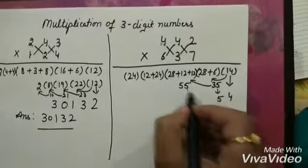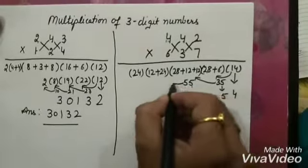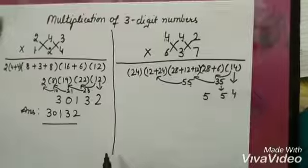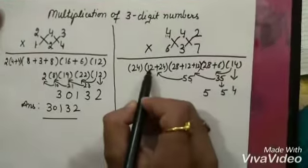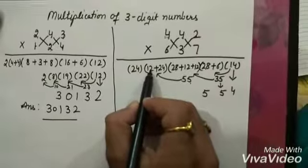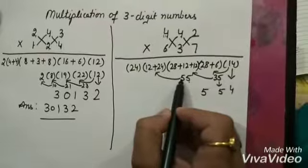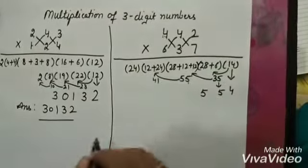So this 5 we will write here. And this 5 will be added to this bracket. 24 plus 12 is 36. 36 plus 5, 41. So it is 41.